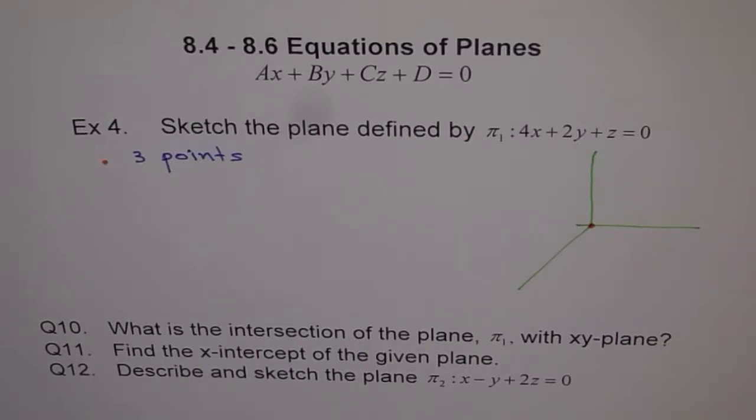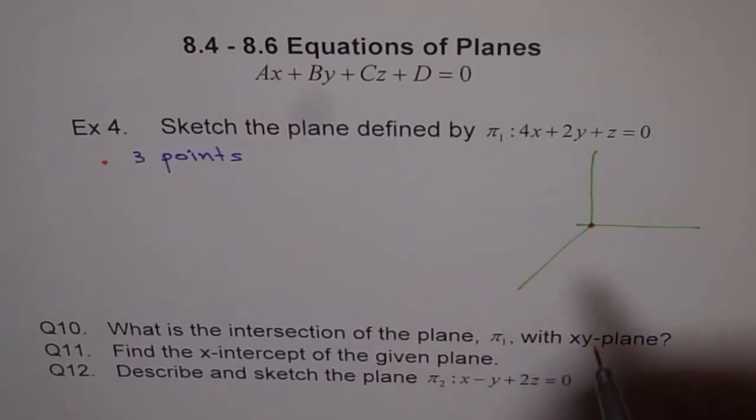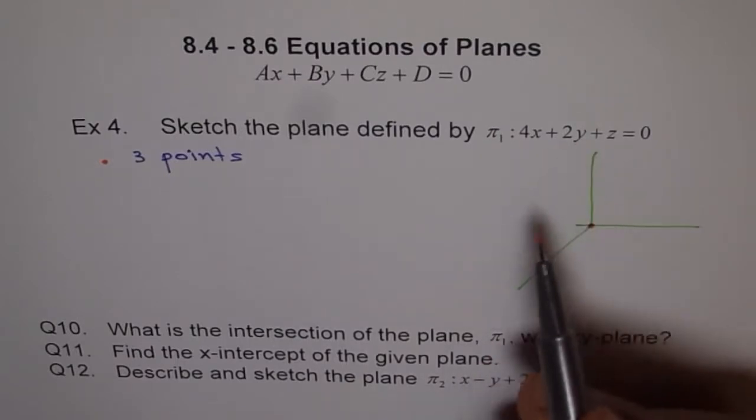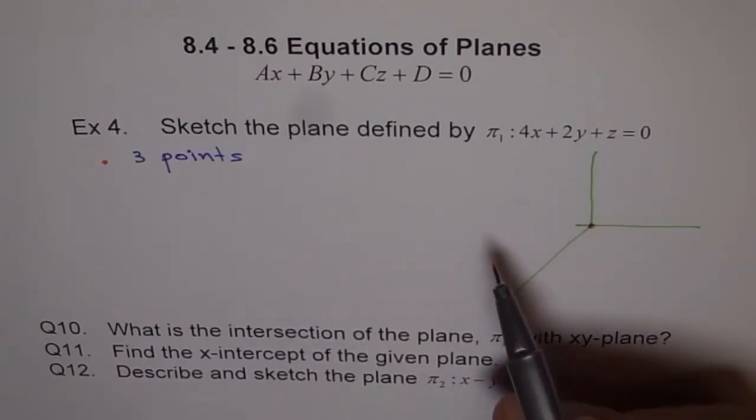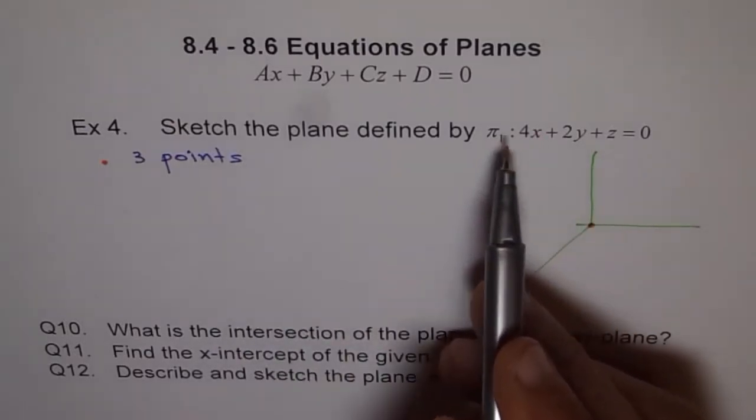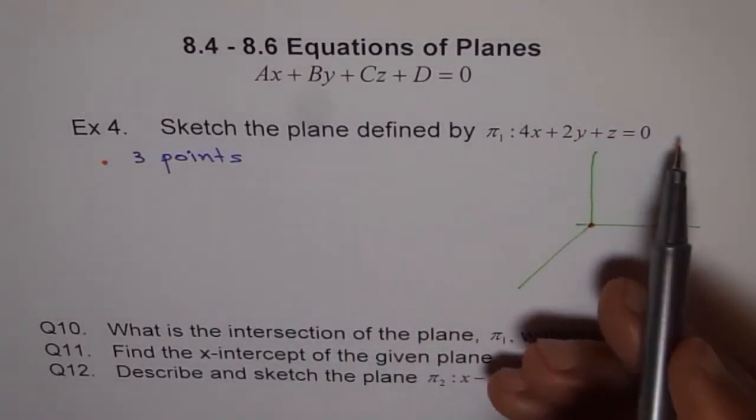So, in this case, we already have a point and that is origin, 0, 0, 0. Let's consider more points on it. So, how do we get more points on it? Just place some value for x, y and find the value of z, for example. We already considered 0, 0. If I write 0, 0, z is 0.